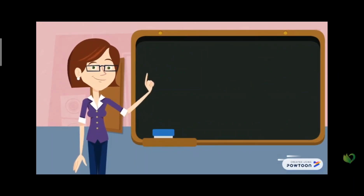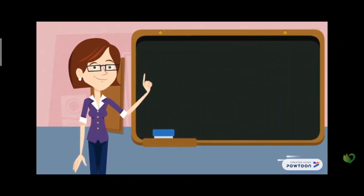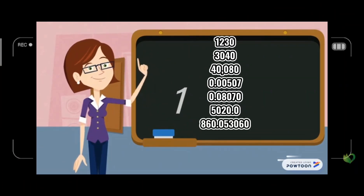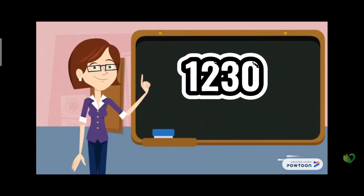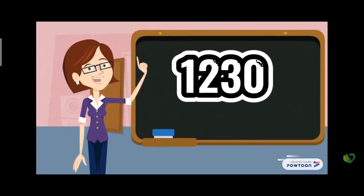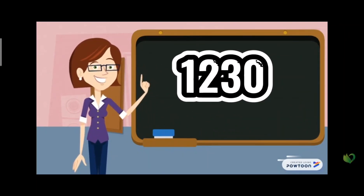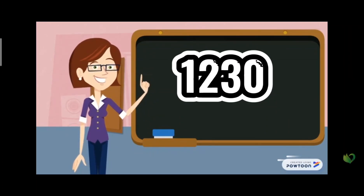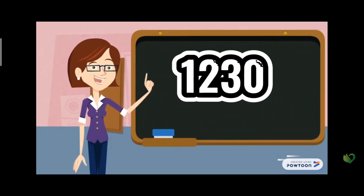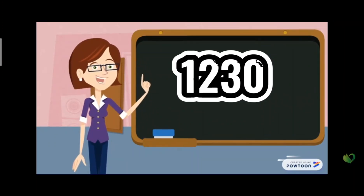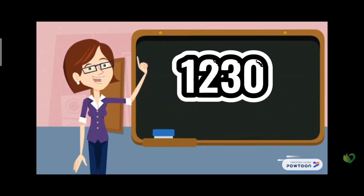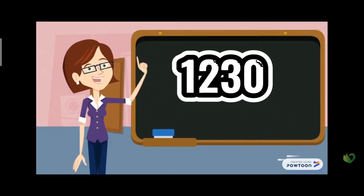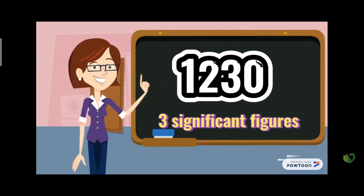Let's take a look at our examples. First: 1230 — how many significant figures does it have? The zero at the right is a trailing zero and there is no decimal point, so we're not going to count it. Therefore we can only count these three non-zero numbers, so we have three significant figures.